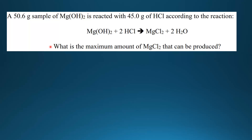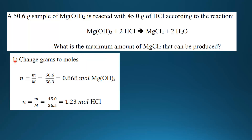The first step is to change grams to moles. We use the equation: number of moles equals mass divided by molar mass. The mass of magnesium hydroxide is 50.6 g and the molar mass of magnesium hydroxide is 58.3 g, so that gives us 0.868 moles of magnesium hydroxide.